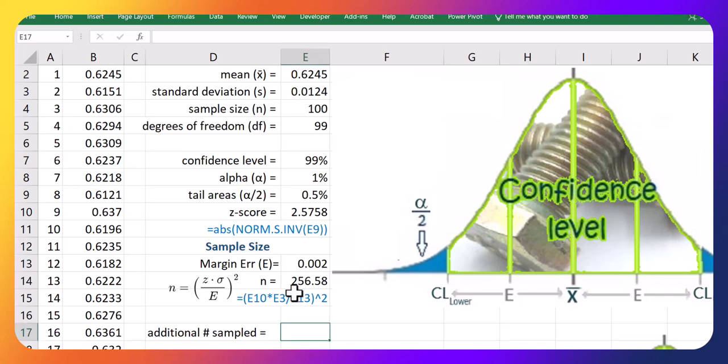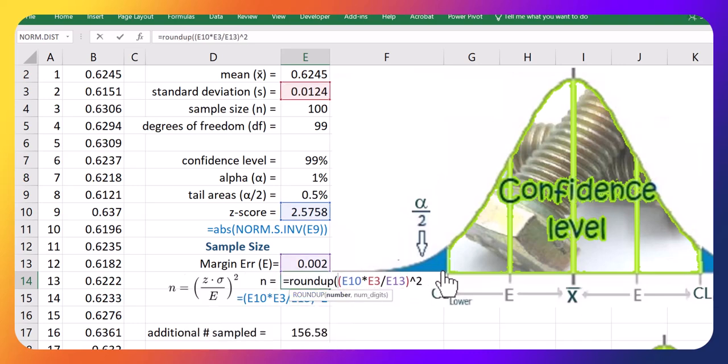Now, if we're talking about the additional number of people we need to sample, then we can just also take a difference between this new sample size and the previous one. One last comment, though. Because we always want our error to be, at most, this limit, I'm going to do one more thing in my n calculation. I'm going to add in a roundup call in there.